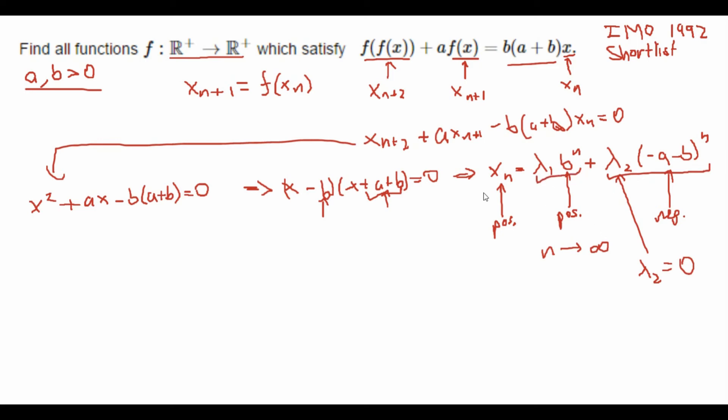So well, this makes everything a lot simpler because look at this. Since λ₂ is zero, we just know that x_n is equal to λ₁ * b^n.